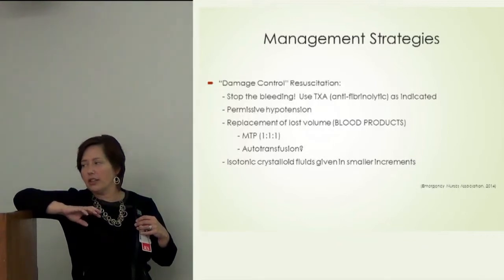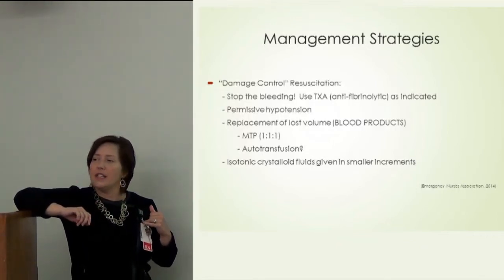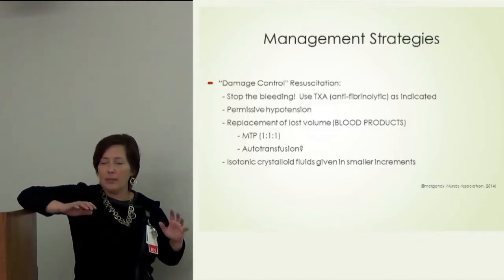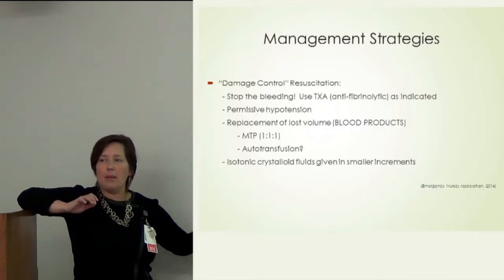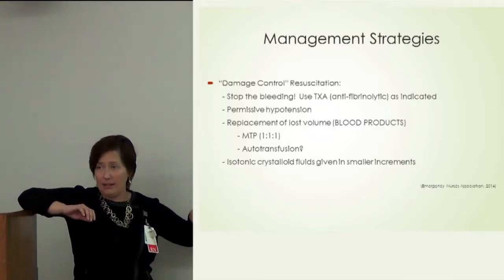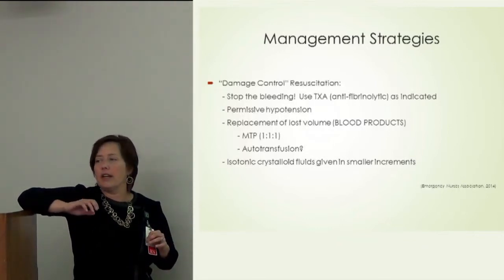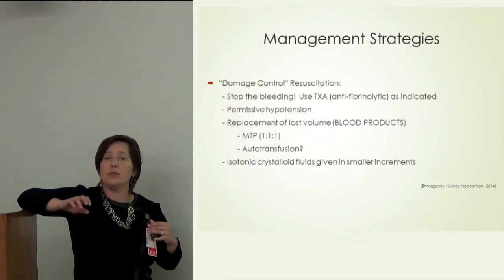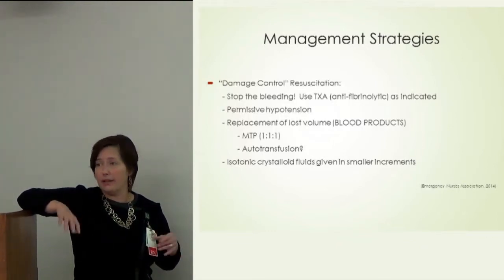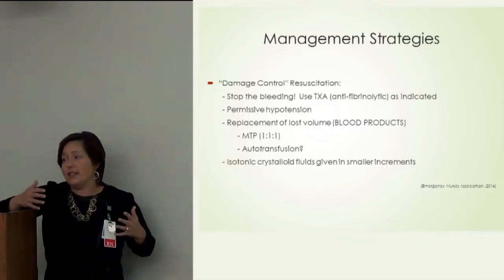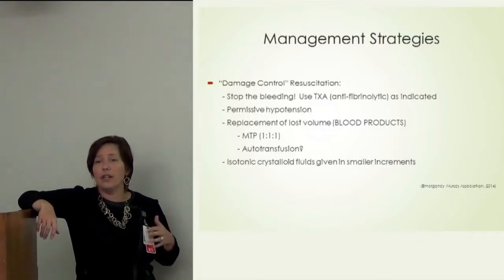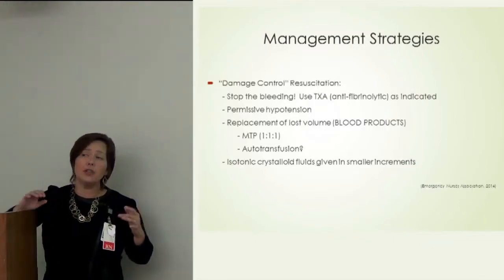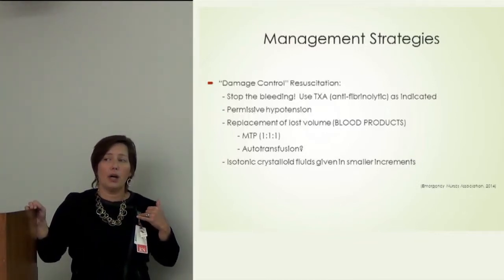Autotransfusion is also discussed — if a patient with hemothorax has a chest tube placed, equipment can take that drained blood and reinfuse it. In almost 11 years in the emergency department I've never seen it done; in emergent situations we use untyped uncrossed blood. We give isotonic crystalloid fluids — normal saline or lactated Ringer's — judiciously. No longer do we give liter after liter of normal saline, as that only dilutes the blood.